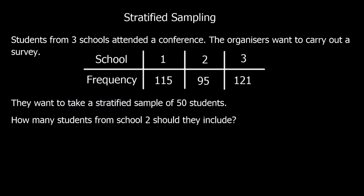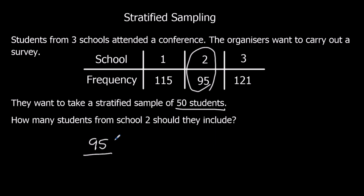See if you can do this question — pause the video and give it a go. Students from three schools attended a conference and they're going to carry out a survey using a stratified sample of 50. How many students from school 2 should they include? School 2 is this one. We want to know what fraction are from school 2 — that's 95 out of the total.